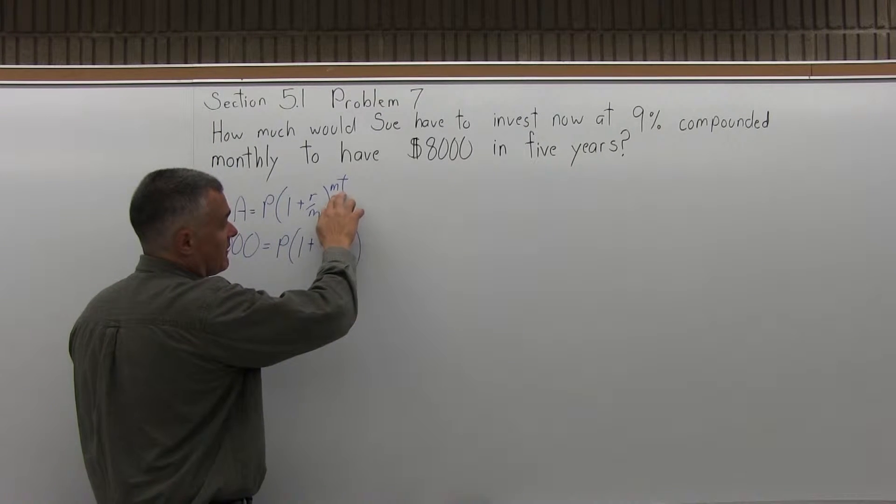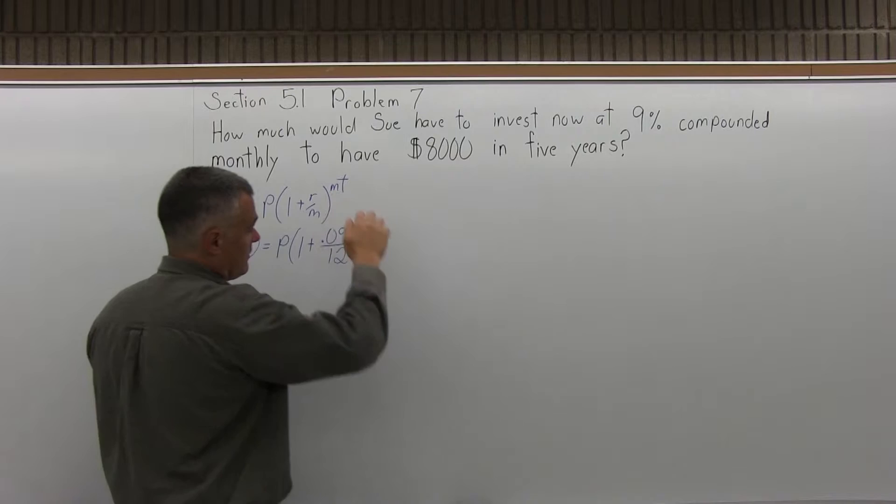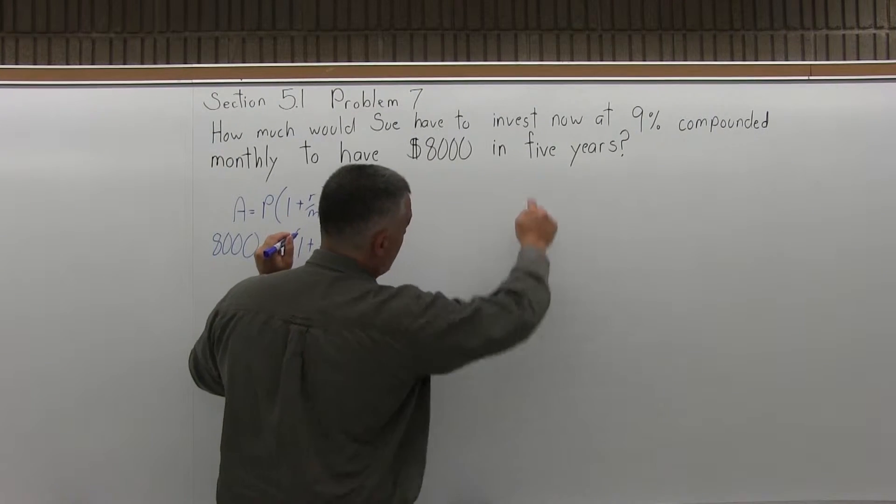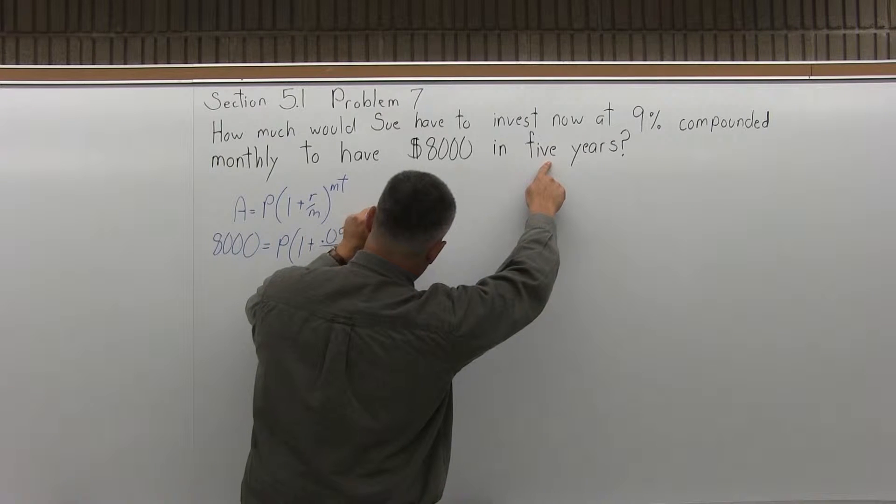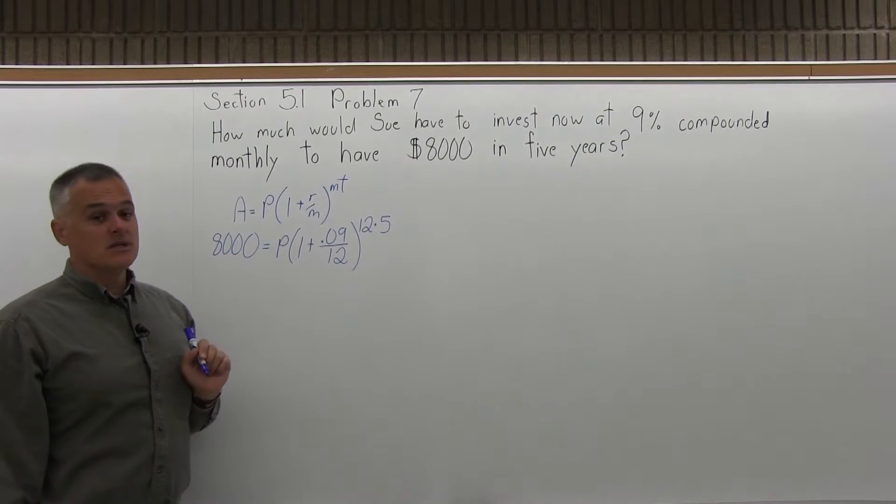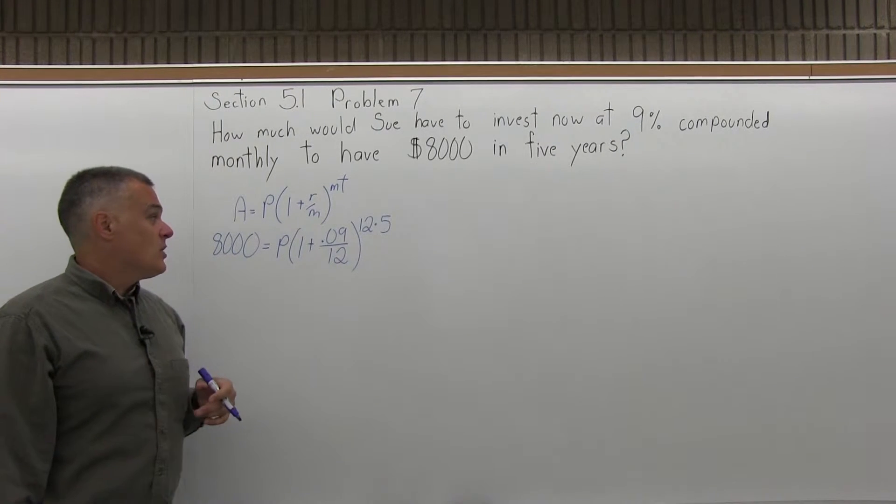I have an exponent of M times T. Again, M is 12 for the monthly compounding. Times T is 5, because we want the money to grow for 5 years. T is the amount of time in years. So that's how the formula fills in.